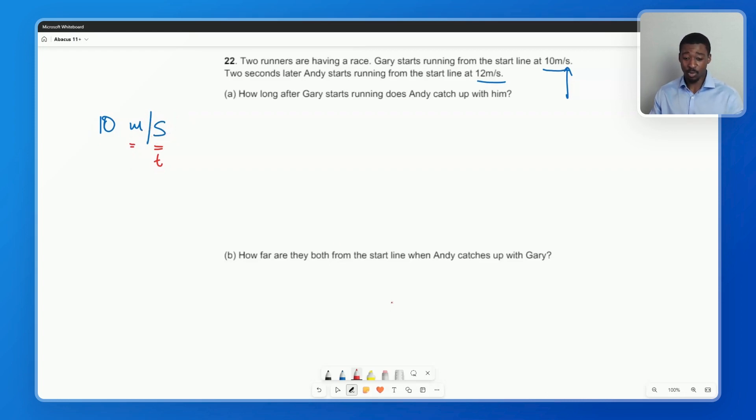So we have the distance traveled for every single unit of time. So visually, we can think about this. On one side, we have Gary, let's call Gary G. And he starts at the start line, he's running 10 meters per second. That means every single second, we have second one, second two, second three, so on. Every single second, he's traveled 10 meters. Then again, 10 meters. Every single second, he's traveled an extra 10 meters.